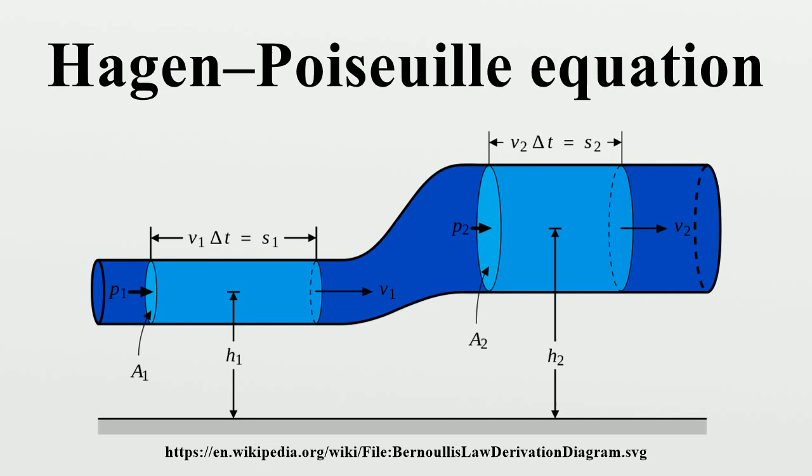The equation does not hold close to the pipe entrance. The equation fails in the limit of low viscosity, wide, or short pipe. Low viscosity or a wide pipe may result in turbulent flow, making it necessary to use more complex models, such as Darcy-Weisbach equation. If the pipe is too short, the Hagen-Poiseuille equation may result in unphysically high flow rates.